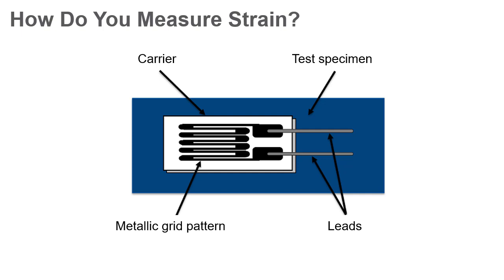The most widely used strain gauge is the bonded metallic strain gauge. The electrical resistance of the metallic grid changes in proportion to the amount of strain experienced by the test specimen.